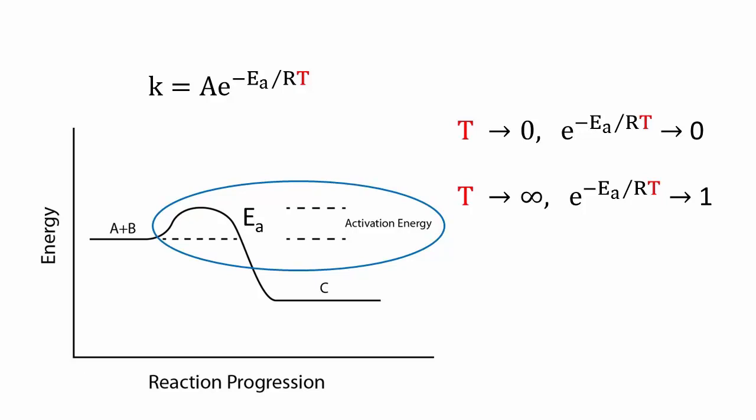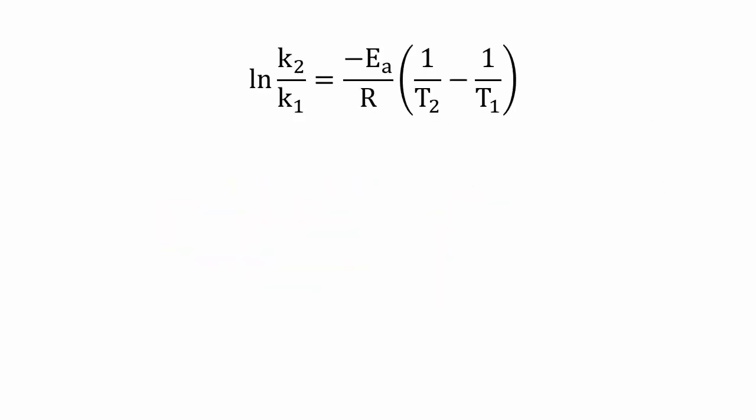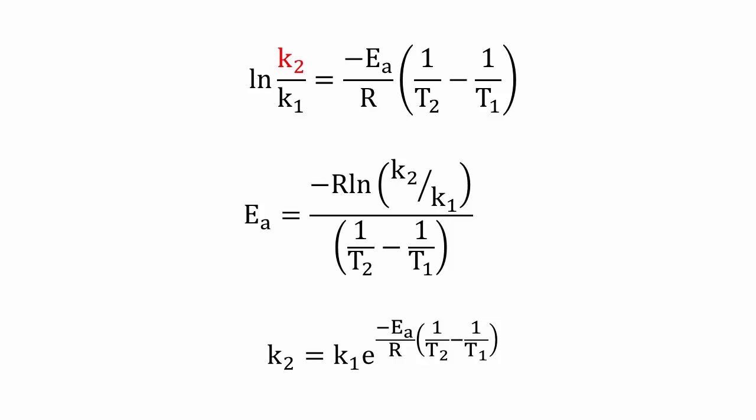Combining the Arrhenius expressions for the rate constant at two different temperatures, we obtain the following expression which allows us to calculate the activation energy, or to calculate the rate constant at another temperature, if we know the activation energy and the rate at one temperature.